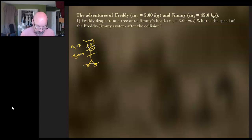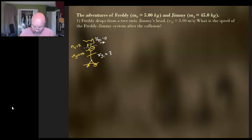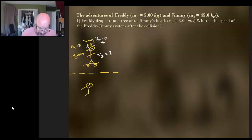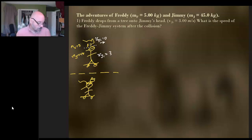It's just before the collision. What I'm interested in is the X velocity of the two. So the Freddy initial is zero, but the Jimmy initial is three. And then we're going to have an after — after the collision. So now we've got Jimmy and he is being accosted by the cat like so.